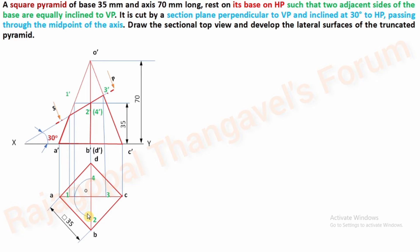D' is invisible, so 4' is marked in brackets. Now join points 1, 2, 3, 4 by means of continuous thick lines and do hatching. Before hatching, shift the remaining portion of the solid into thick lines: 1' to A', 2' to B', 3' to C', 4' to D'. Transfer 1 to A, 2 to B, 3 to C, 4 to D as thick lines and do hatching. This completes our sectional top view.